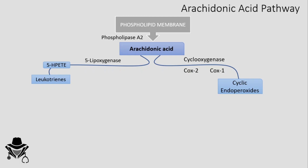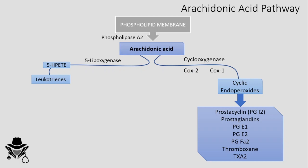COX-2 is the inducible enzyme responsible for the pathological production of eicosanoids. After going through these enzymes we will have cyclic endoperoxidase, which after many steps will ultimately produce prostacyclin (prostaglandin I2), prostaglandins E1, E2, and F2α, and thromboxane A2.